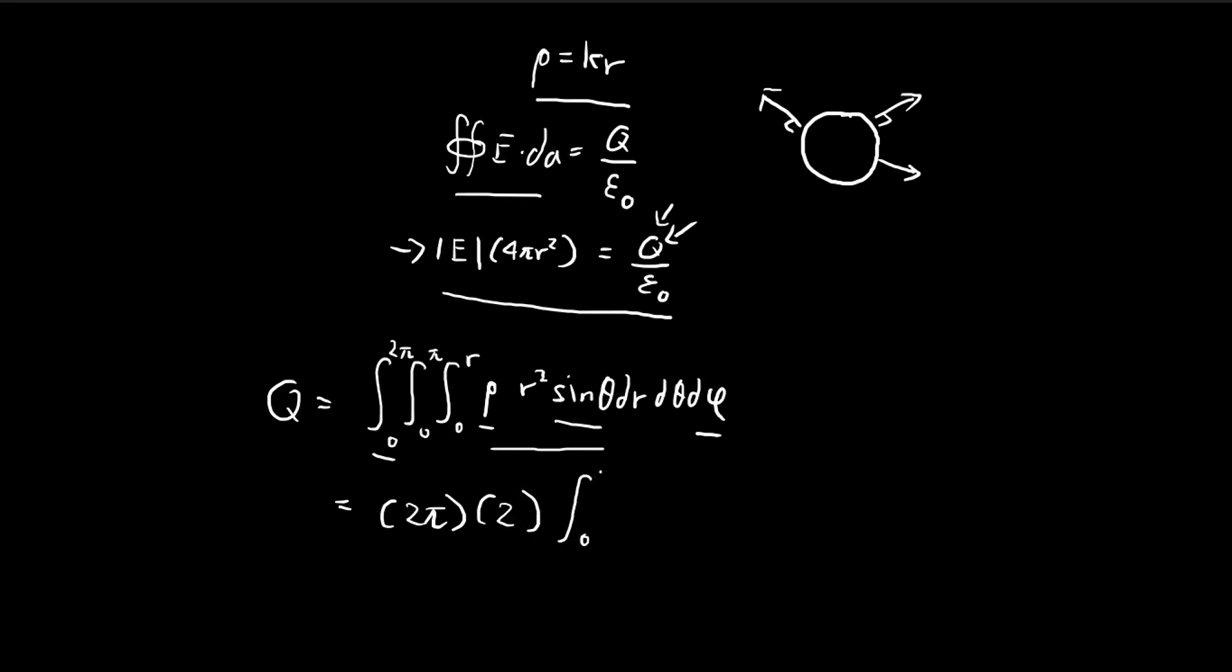So we're left with 0 to R, the charge density times R squared times dr. And of course, we're given the charge density is equal to kr. So we get kr to the power of 3 dr.